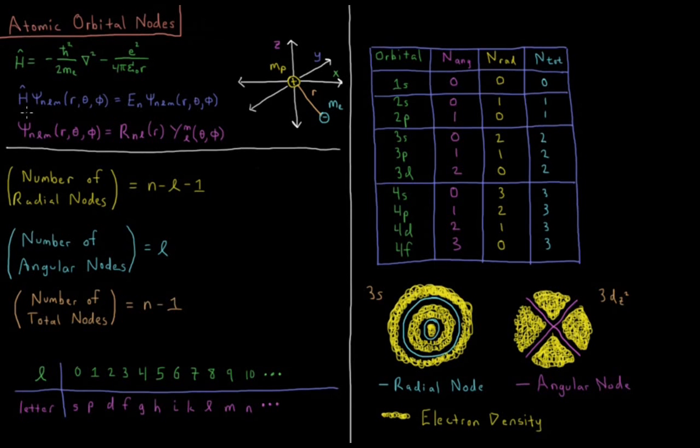For our Schrödinger equation, we have H psi equals E psi. Psi depends on three quantum numbers N, L, and M, and it depends on the spherical polar variables R, theta, and phi. Our energy only depends on the principal quantum number N.